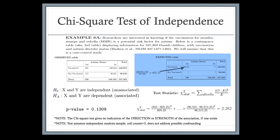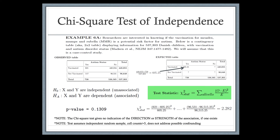For example, 621 individuals in the sample were vaccinated and later diagnosed with autism. If there's no association between the two variables, we'd expect about 605.25 individuals in that cell. The chi-squared test statistic compares observed cell counts to expected cell counts across the entire table. If observed and expected are similar, the statistic stays small; if vaccination and autism are associated, the tables should look quite different and the statistic grows large.